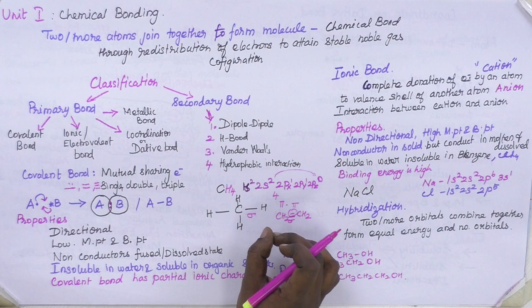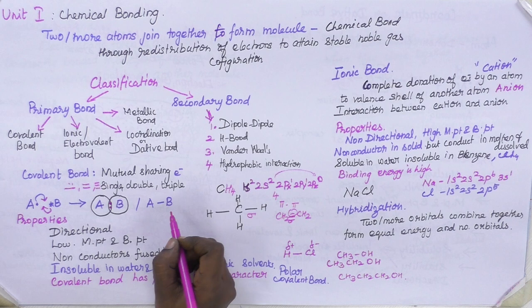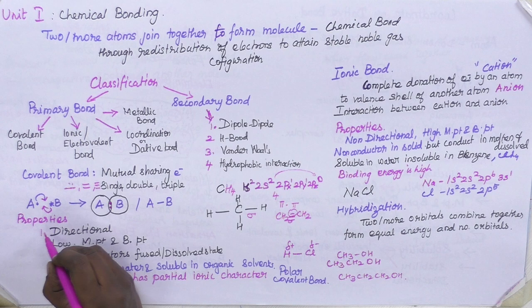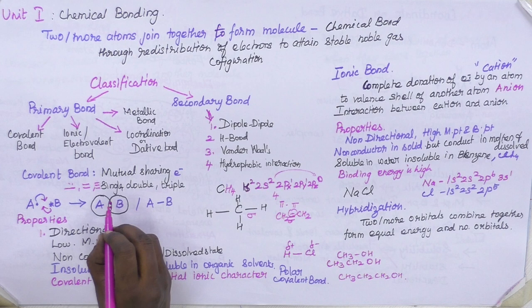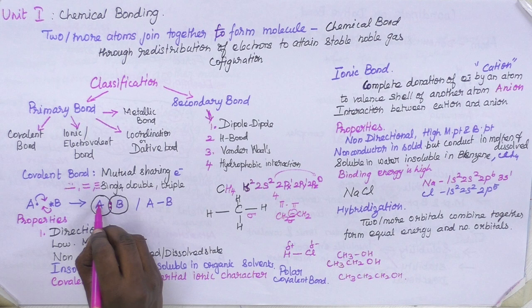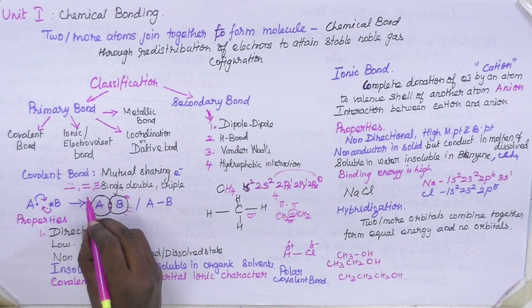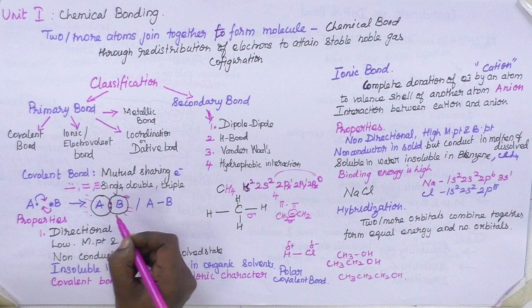So I have explained what a covalent bond is — its definition, types, and how it is formed. Now we are going to see the properties of the covalent bond. When you think about covalent bond formation, it is a directional one. The bonding electrons are present only in between the nuclei of the two atoms. The attraction exists only in the area between centers A and B, and there is no interaction above, below, or behind — that shows it is directional.